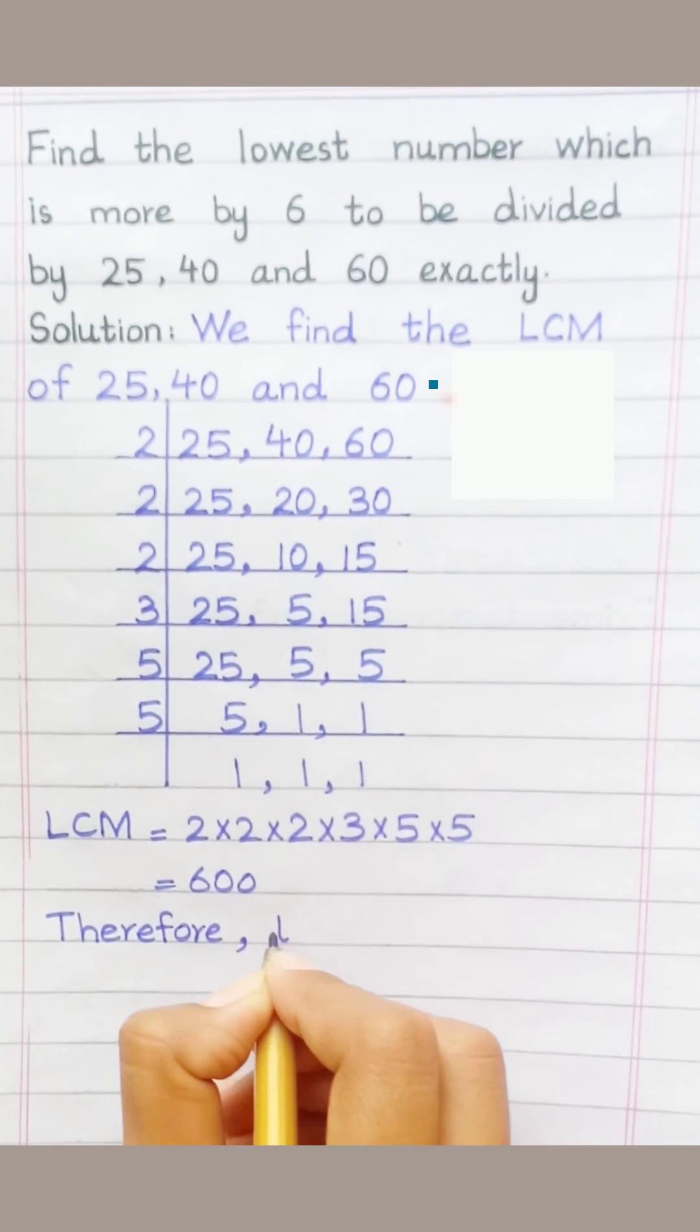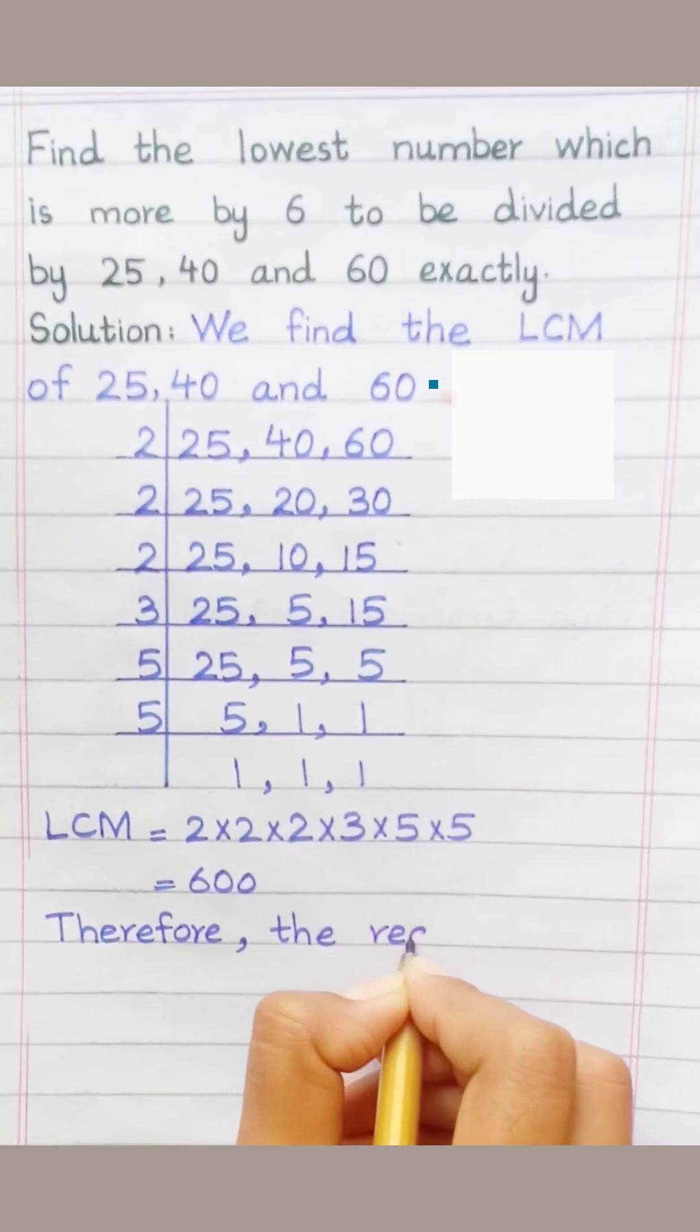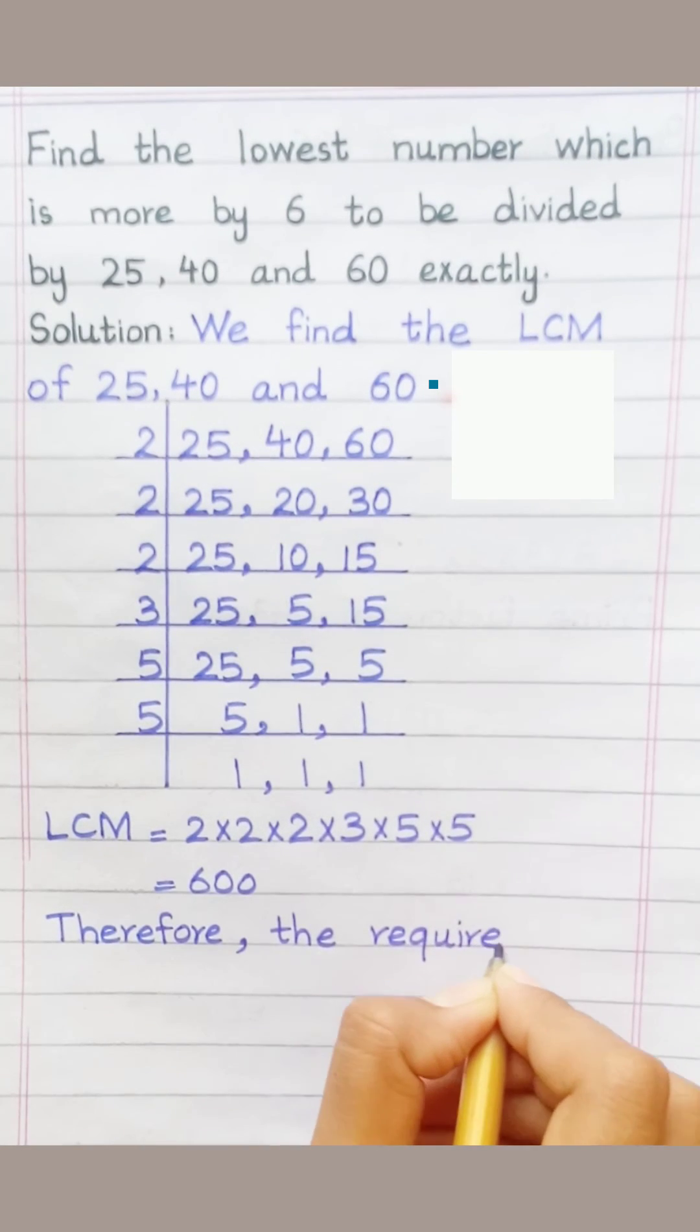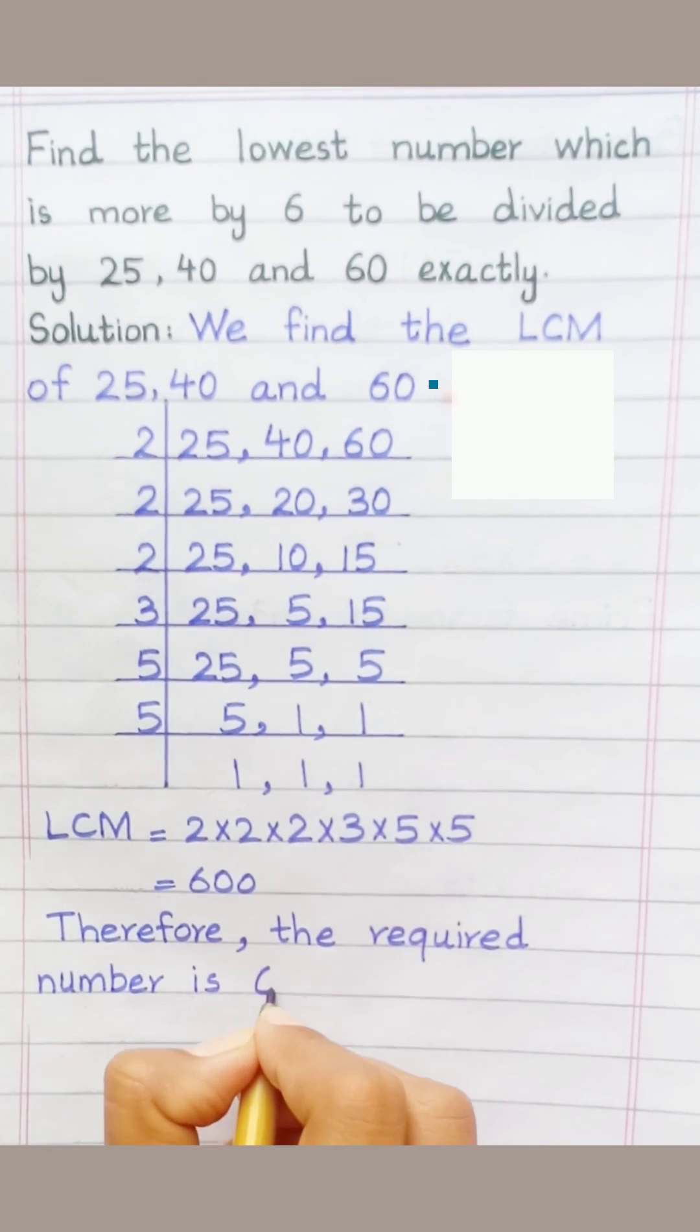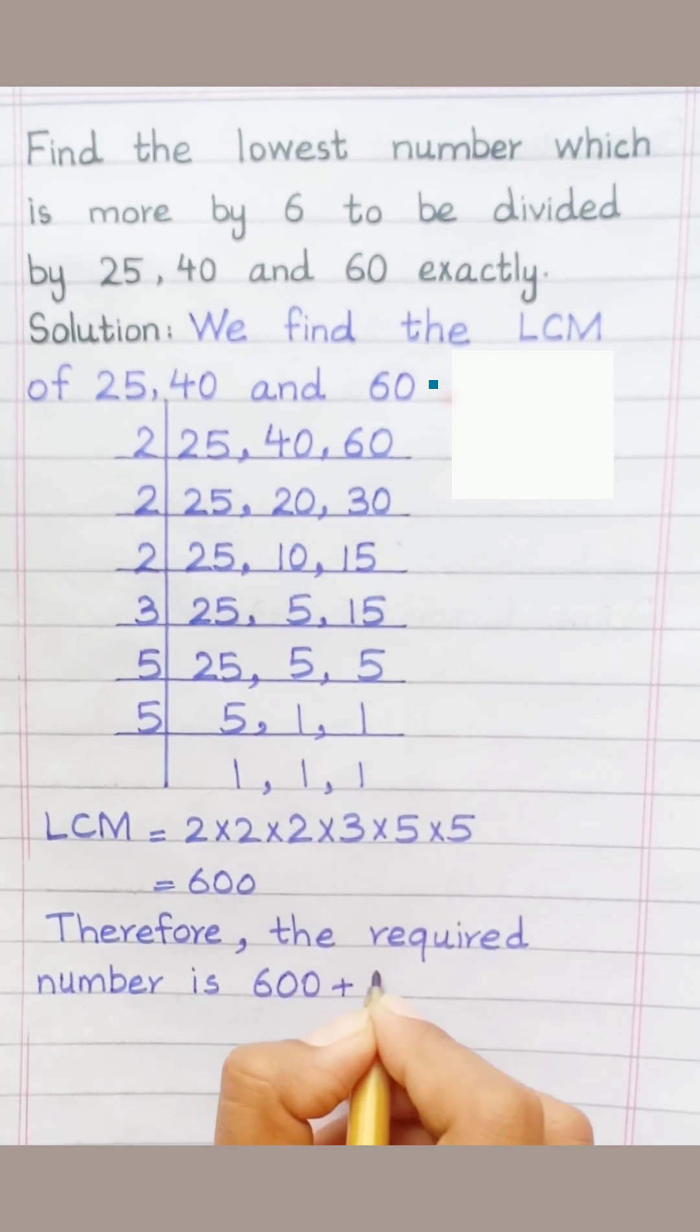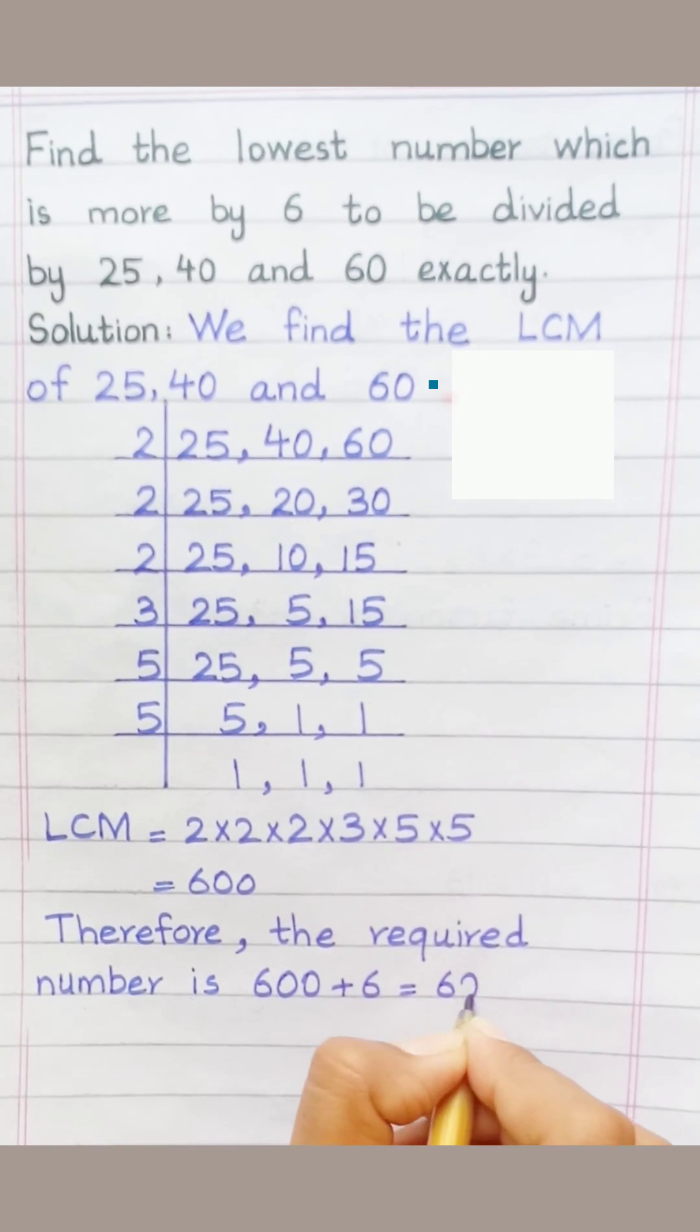Therefore, the required number is 600 plus 6 equals 606.